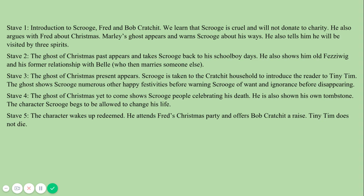In Stave Two, the main aspects are that the Ghost of Christmas Past appears and takes Scrooge back to his schoolboy days. He also shows him old Fezziwig and his former relationship with Belle, who is then married to someone else. The notion being that Scrooge was obviously happier in the past, and that something then changes.